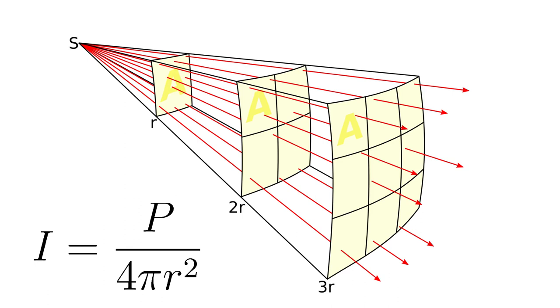The inverse square law only applies when the source is point-like and spreads out its energy equally in all directions. The Sun is hardly point-like, but relative to the distance Sun-Earth, it's a good approximation.